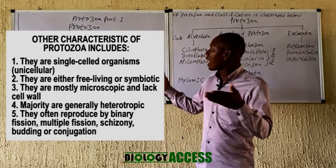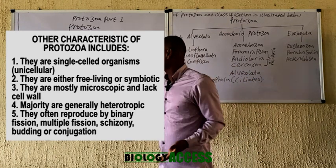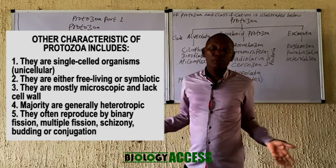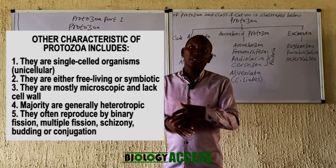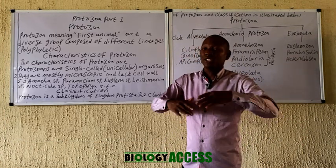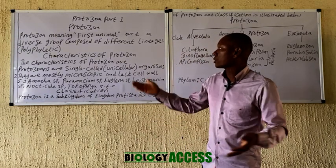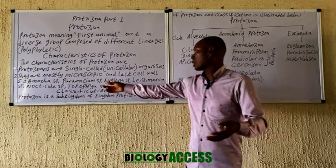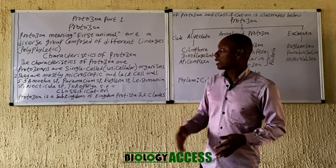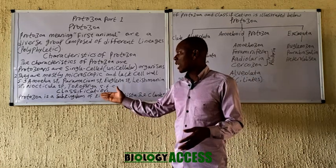Some of them lack a cell wall, while some do have a shell-like structure. Examples of protozoa include the Amoeba, the Paramecium, the Euglena, the Leishmania, and others.